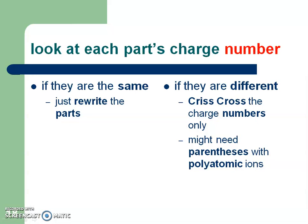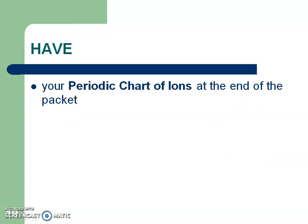To write a compound, you need the charge of both parts. If the charge numbers are the same on both parts, you just rewrite the parts. If they're different, you're going to crisscross those charge numbers — and you might need parentheses. Remember I talked about X and Y: the first part being X and the second part being Y — that reinforces there's always a positive first part and a negative second part. Make sure you have your periodic chart of ions from the end of your packet; that's always going to be helpful.